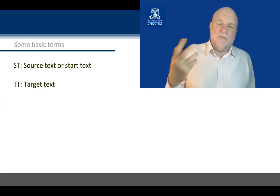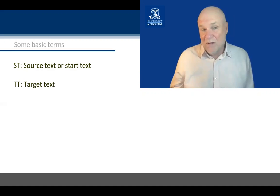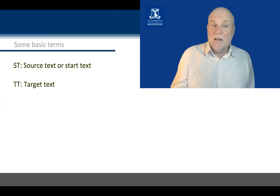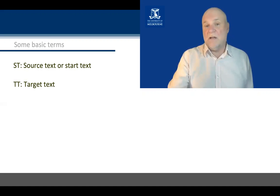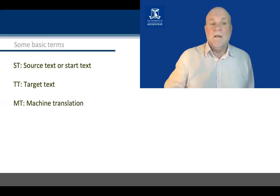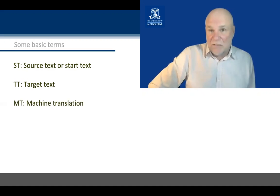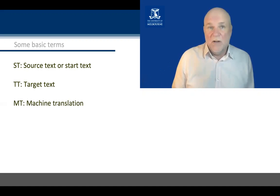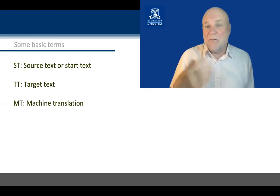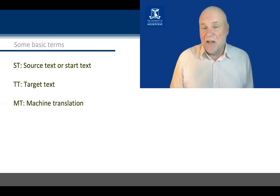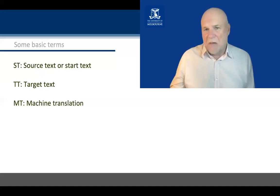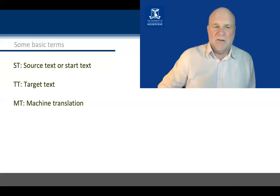The text you produce is called a translation. Technically, we prefer the term target text or TT. MT is then machine translation of the kind you know as Google Translate, Microsoft Translator, UDAO, Baidu, and many, many more — all machine translation.